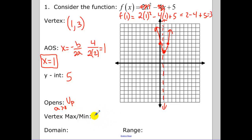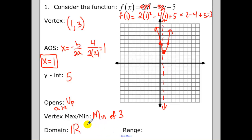We sketch in the function opening up because a is greater than zero. The vertex gives a minimum value of 3 — that's the smallest y-value. The domain is all real numbers because we can plug in any value. The range is y greater than or equal to 3, because 3 is the smallest y-value and everything goes upward from there.